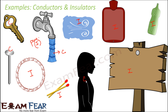Whenever we touch a current-carrying naked wire with our hands, our body being a good conductor allows current to flow through it, and that is how we experience electric shock. But if we are wearing rubber gloves and then touch a live wire, we will not get an electric shock because rubber is a poor conductor of electricity — it blocks the current from flowing and protects us.